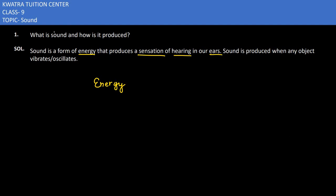Now, how is it produced? The answer is: sound is produced when any object vibrates or oscillates. This